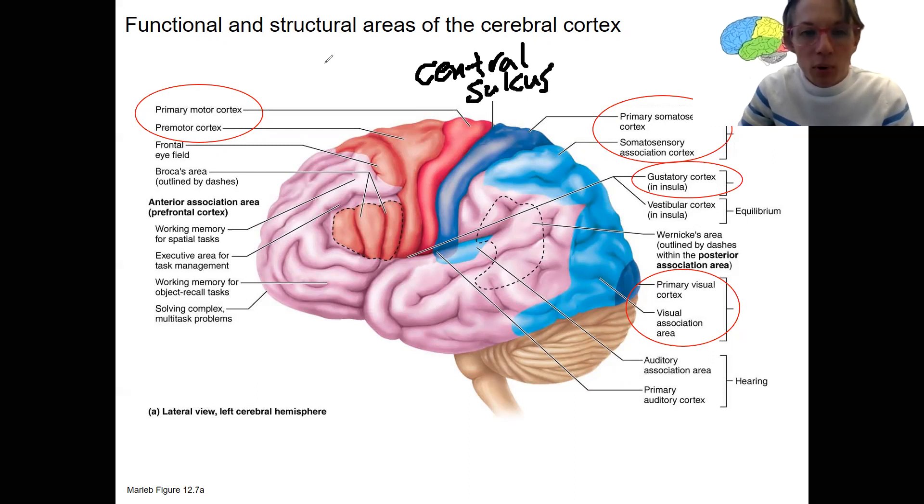This here is our central sulcus. So primary motor cortex in red here, that is made up of our pre-central gyrus. The pre-motor cortex is just in front of that, just anterior or rostral to that. So that's going to be involved in motor control.